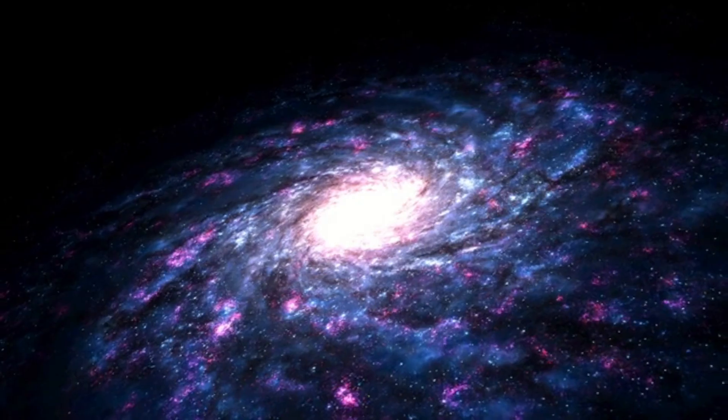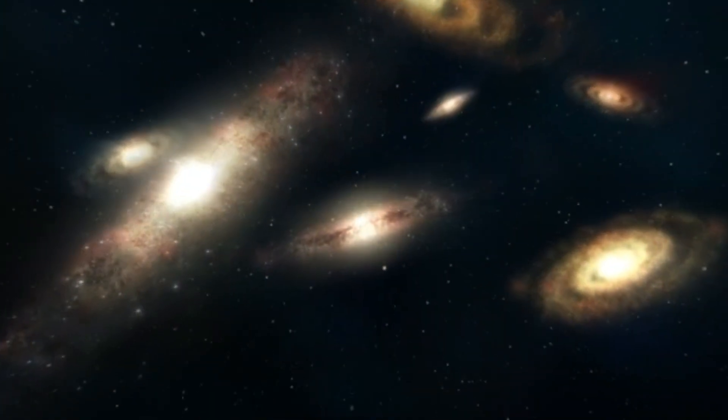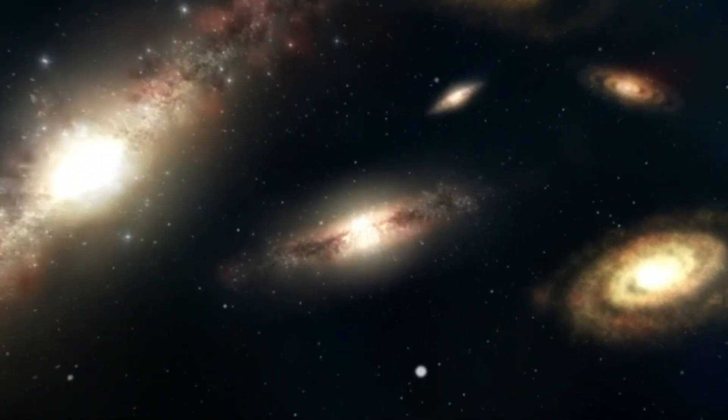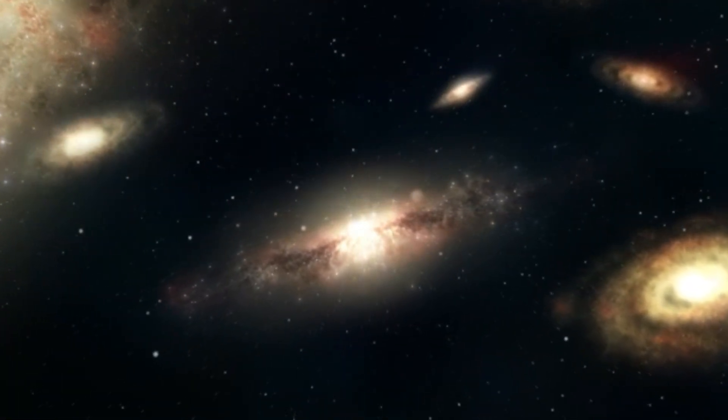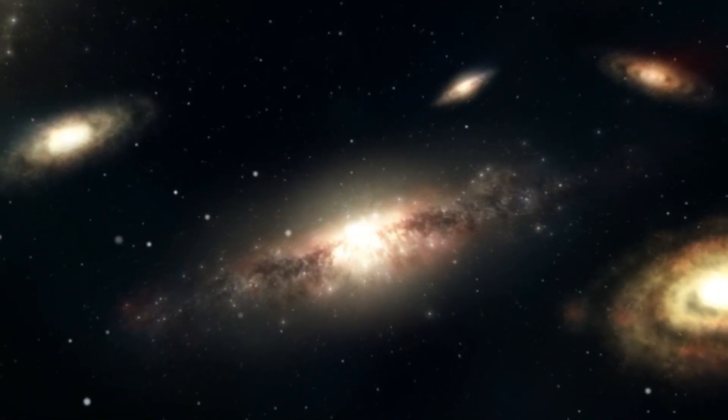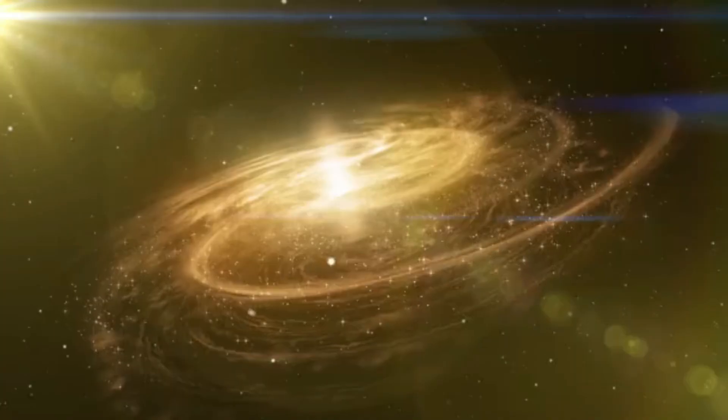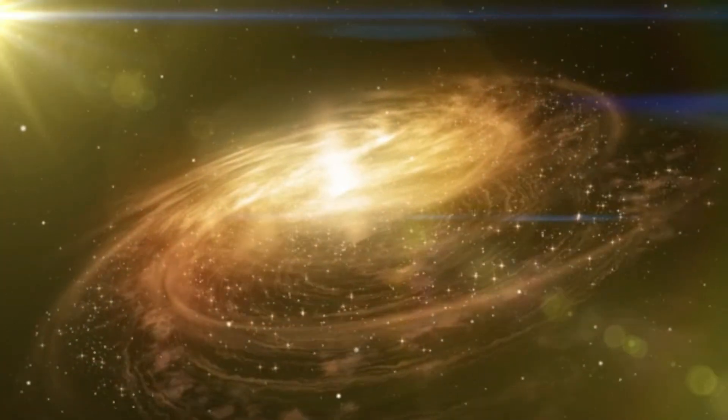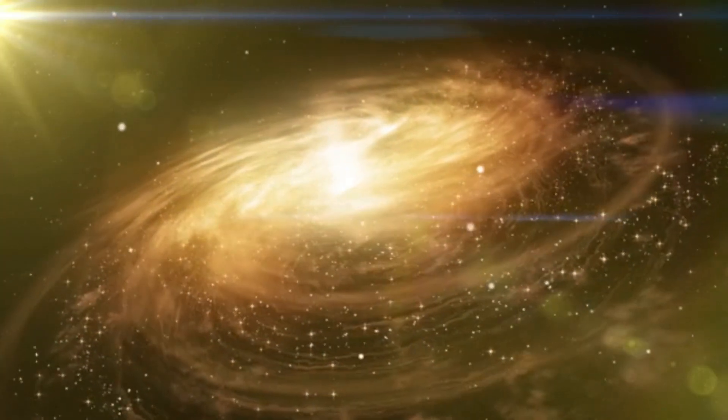There are two leading theories to explain how the first galaxies formed. The truth may involve a bit of both ideas. One says that galaxies were born when vast clouds of gas and dust collapsed under their own gravitational pull, allowing stars to form.